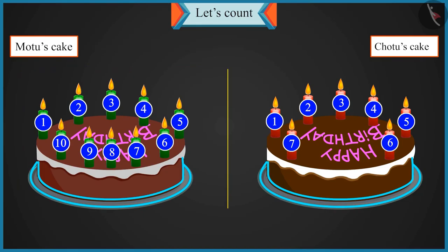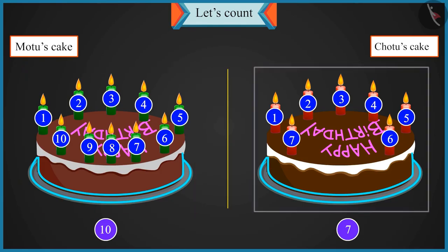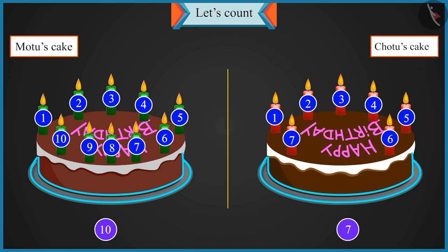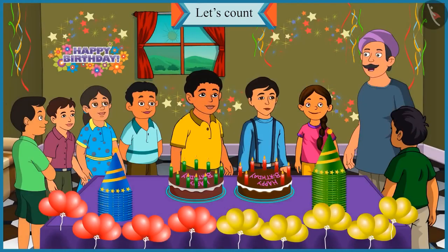Now tell me, between seven and ten, which number is bigger? Uncle, there are more candles on Motu's cake than mine. So ten is more than seven. Ten is a bigger number. Absolutely right. Thank you, Uncle.